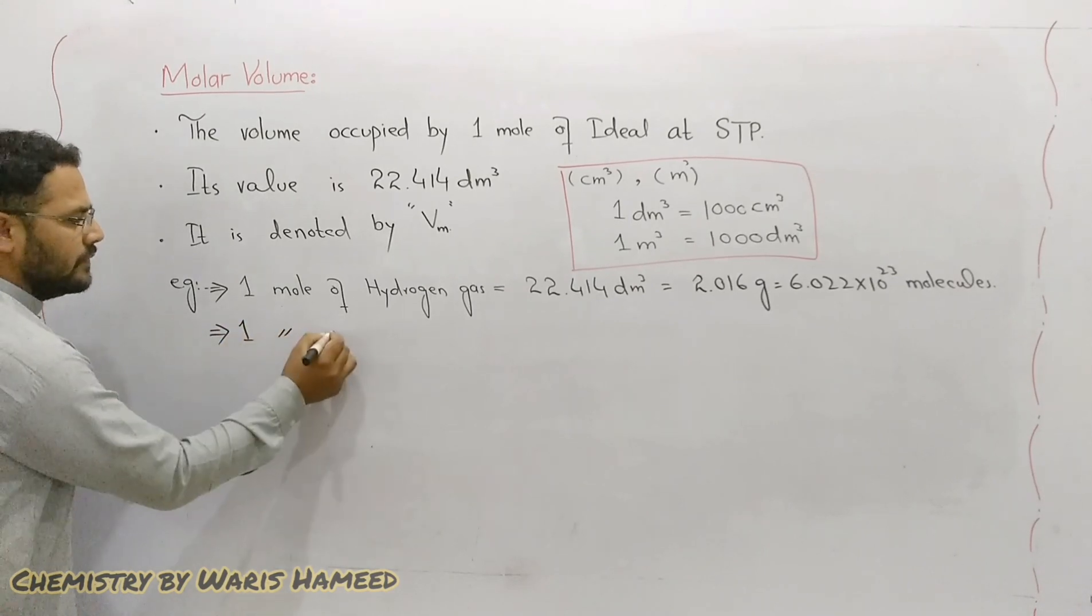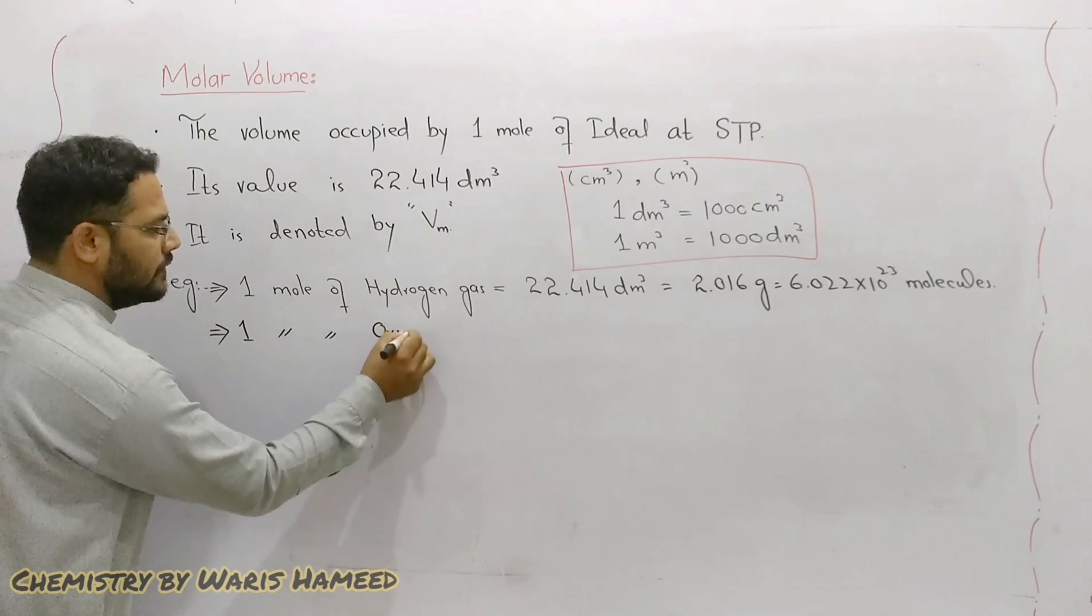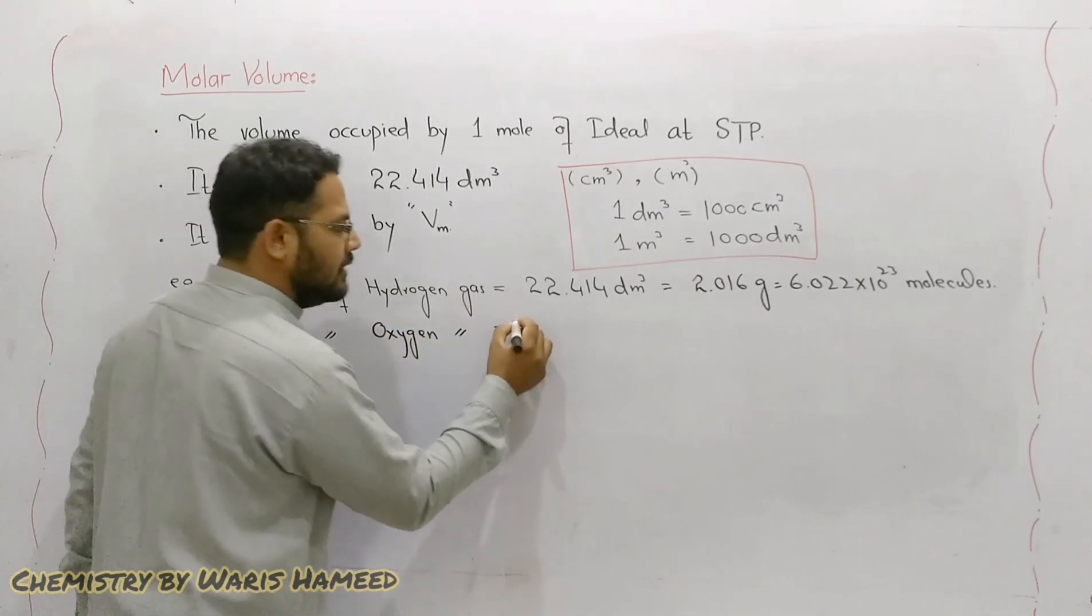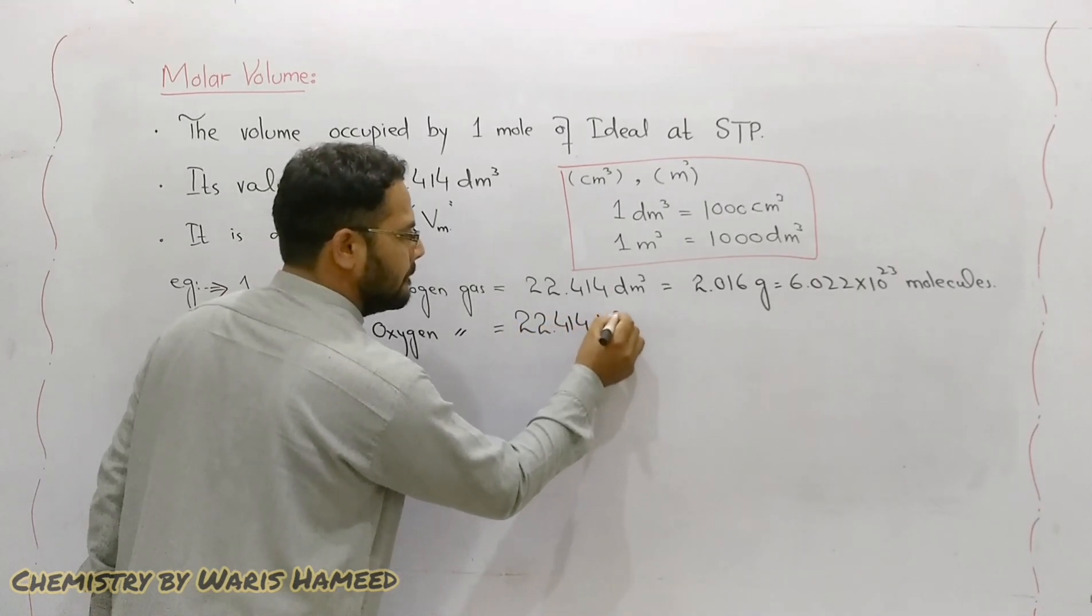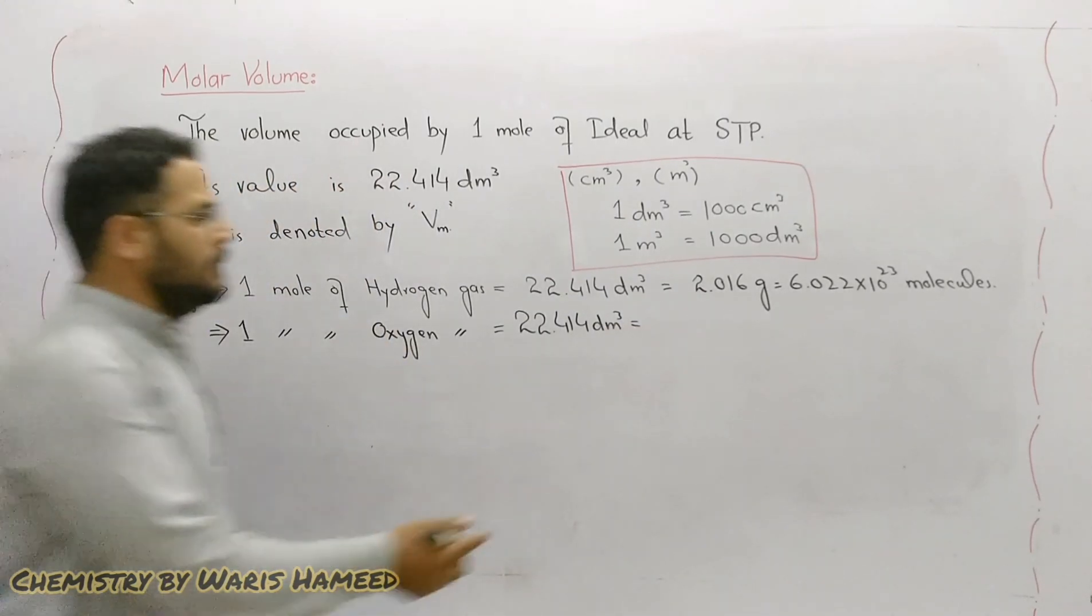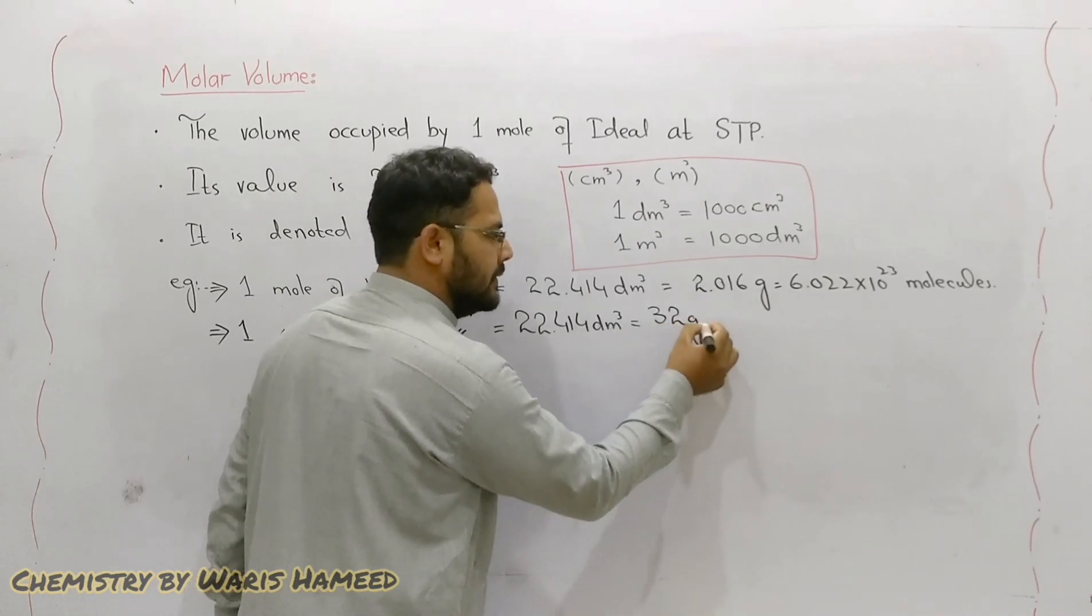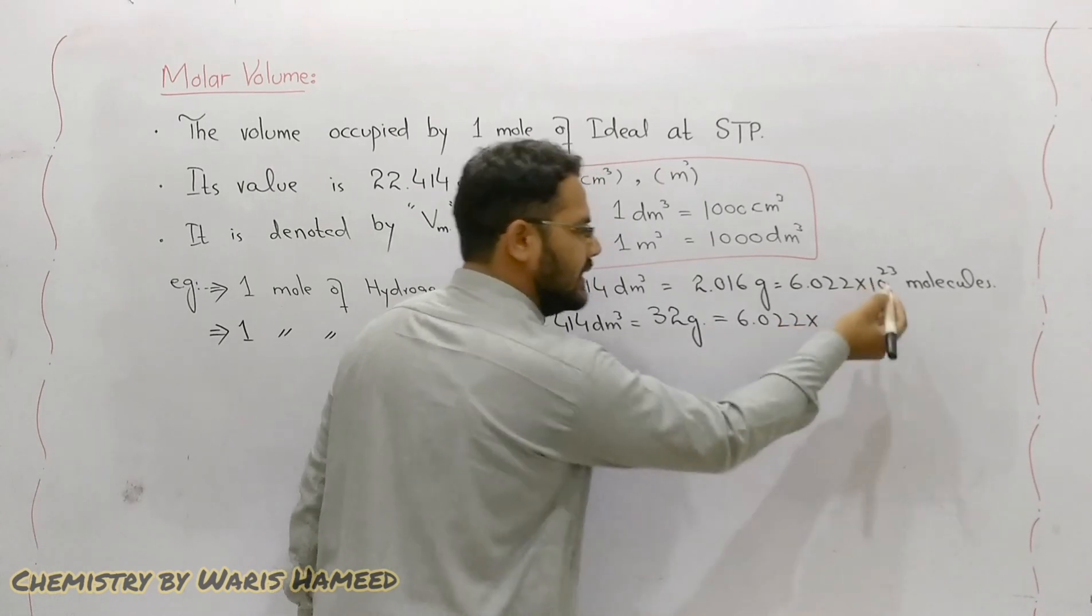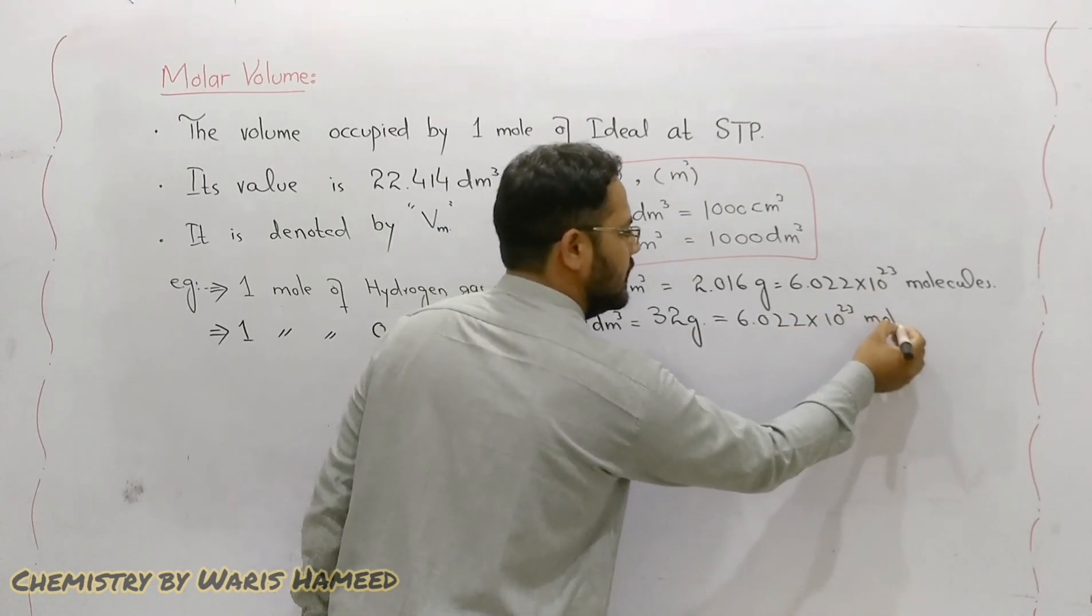One mole of oxygen gas will also occupy the same volume. Its mass will be 32 grams and there are the same number of molecules, that is Avogadro's number, 6.022×10²³ molecules.